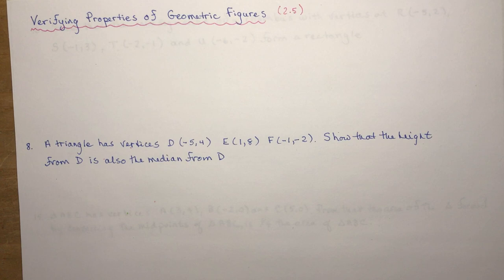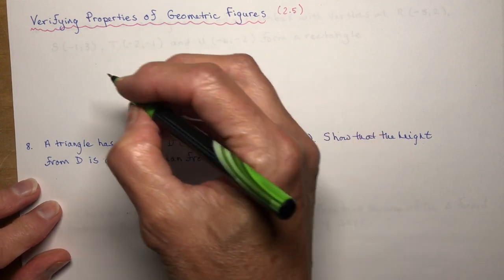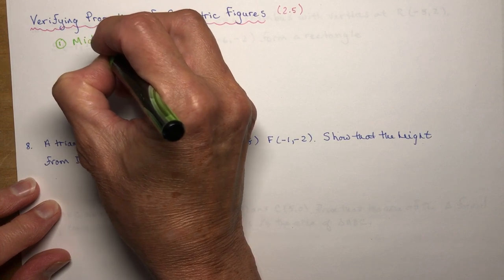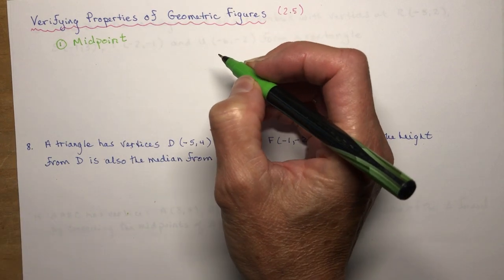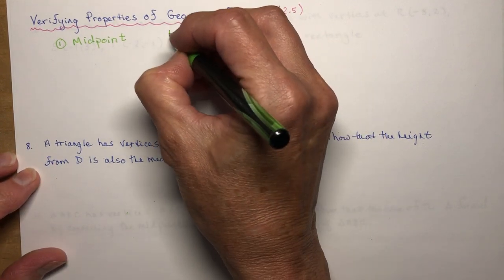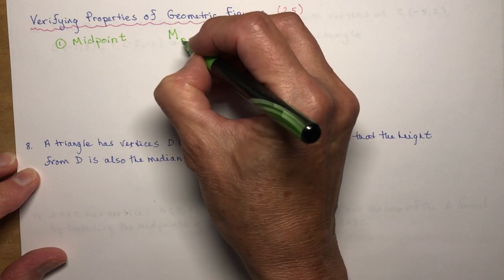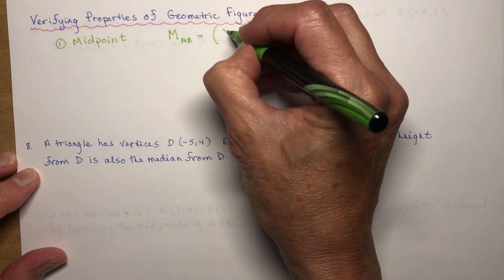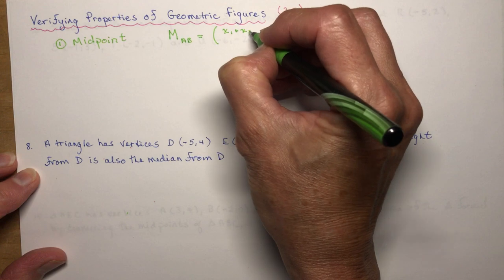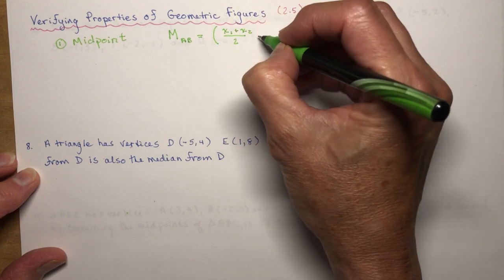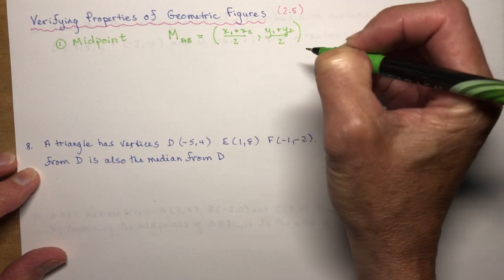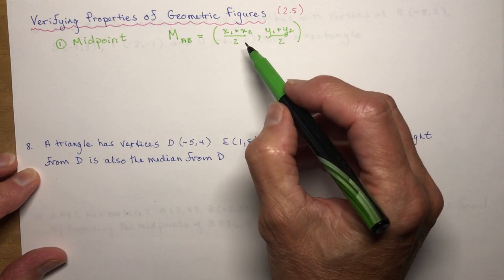You'll be working with three basic formulas that you should by now know off by heart. The first is the midpoint of a line, because you're going to be finding what they call mid-segments, which are just from the midpoints. The midpoint of AB: all you do is add the x-coordinates and divide by 2, and same for y. That's how you find a midpoint — don't forget the brackets because you are finding coordinates.